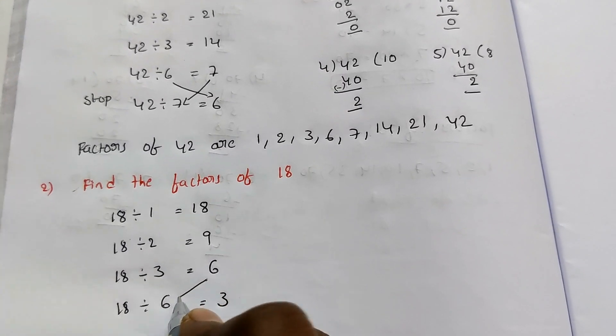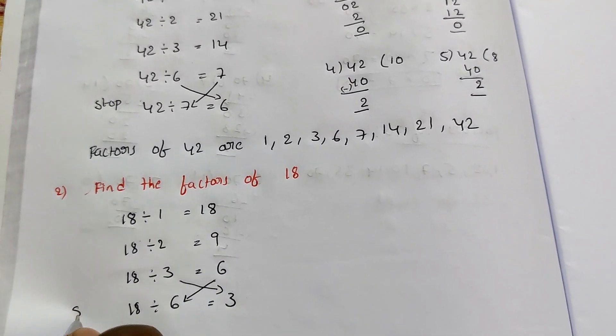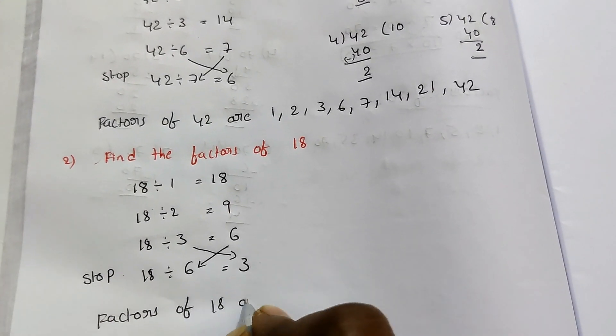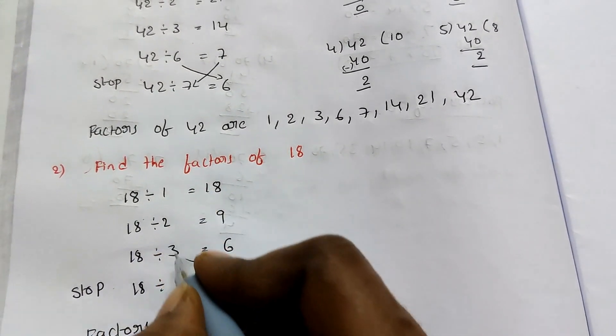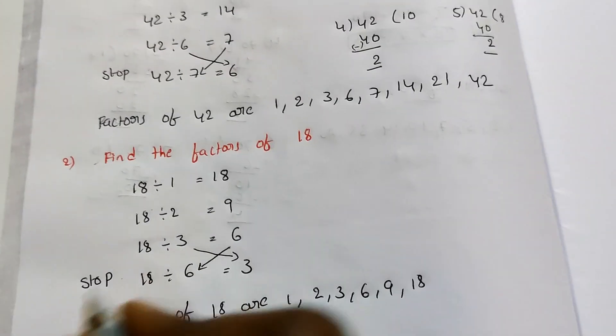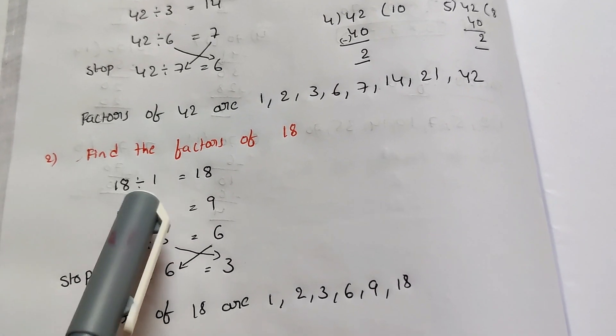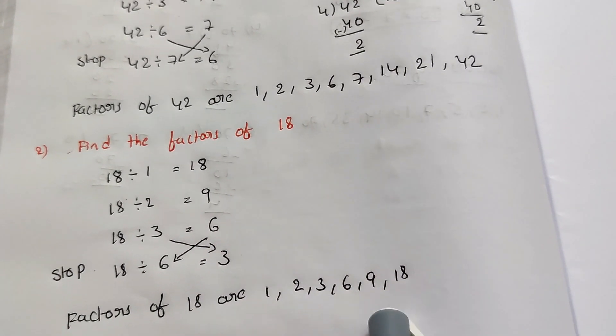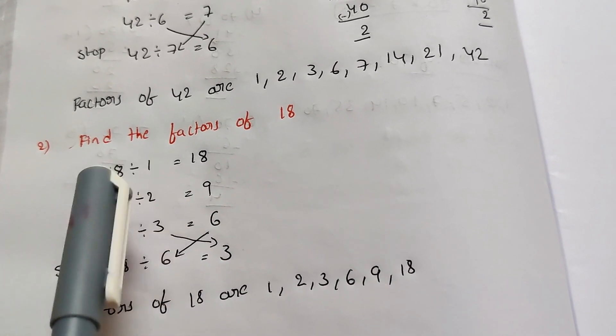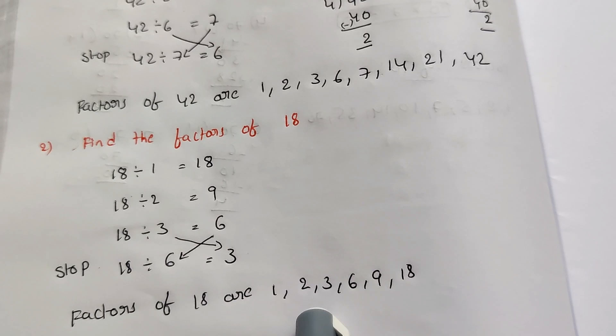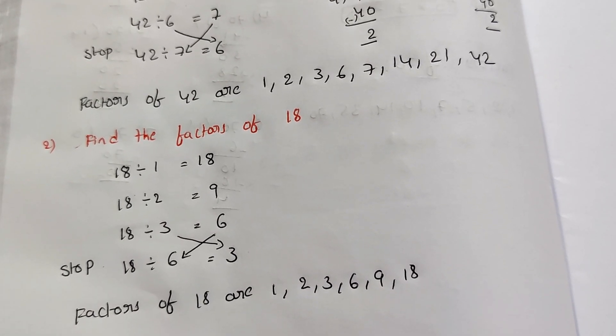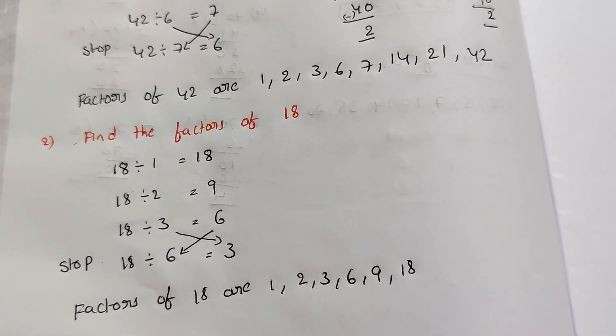6 table: 18 divided by 6 equals 3. We will look at the quotient and divisor. When divisor and quotient repeat, we stop. The factors of 18 are: 1, 2, 3, 6, 9, and 18. So using the division method, we find the divisors and quotients as factors. Please subscribe to my channel. Thank you, friends.